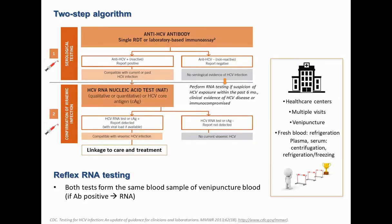That's why the conventional diagnostic algorithm for hepatitis C is realized in two steps. First, we perform a serological test to detect HCV antibodies, which tells us if the person has been infected with the virus. If positive, we then perform a confirmatory test detecting HCV RNA, to determine if there is an active viral infection requiring treatment. These two tests are conventionally performed on two different venipuncture blood samples.